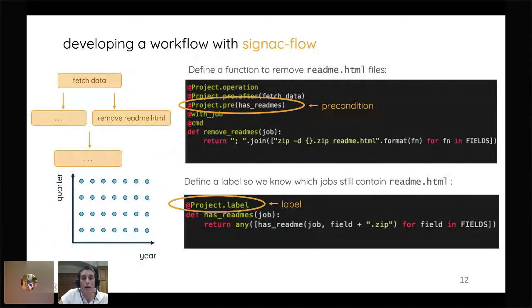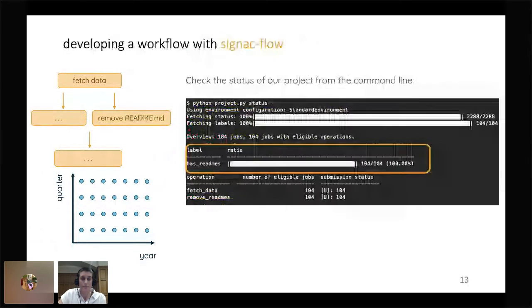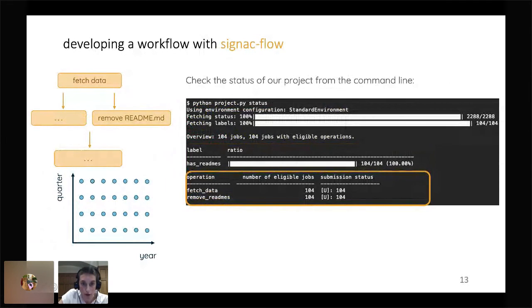And so, and then I do want to mention there's also this functionality called labeling, which is very useful for when you want to see the status of your overall project. So what this looks like is if you run python project.py status. So project.py is what contains all of your functions. So everything that I just showed in the last slide and because we've assigned has readmes as a label, it will tell you what percent of operations this is valid for. And so you can see that we also have the function fetch data and it will tell you how many jobs are eligible to be run. So that if you would run this workflow, it would run fetch data on 104 eligible jobs and run remove readmes on 104 eligible jobs. And then once that has run these would say zero.